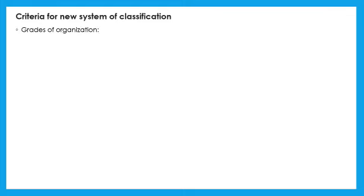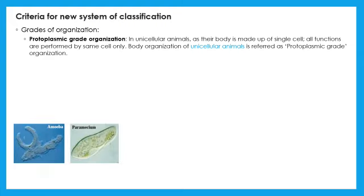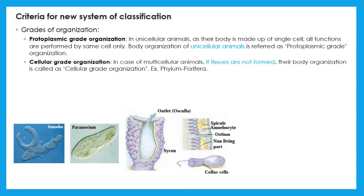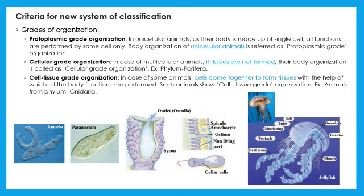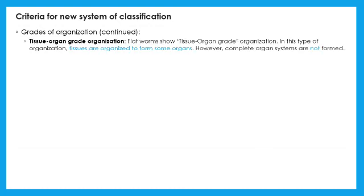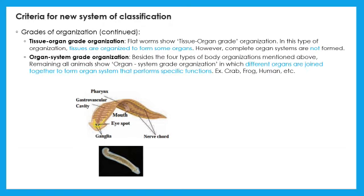Grades of organization means the way an organism has different body formation. Unicellular organisms like amoeba, paramecium are included in protoplasmic grade. Phylum Porifera have only cells. Tissues are not formed in their body which is called cellular grade organization. In case of phylum Cnidaria cells come together to form tissues. They show cell tissue grade organization. Tissues are organized to form some organs. This is tissue organ grade organization. For example, Platyhelminthus.